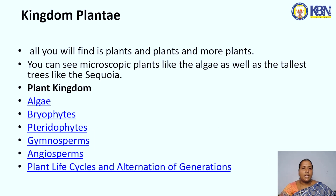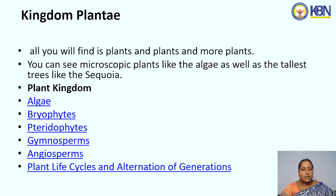Kingdom Plantae: all you will find is plants. You can see microscopic plants like algae as well as the tallest trees. Plant kingdom includes algae, bryophytes, pteridophytes, gymnosperms, angiosperms, plant life cycles, and alternation of generation.